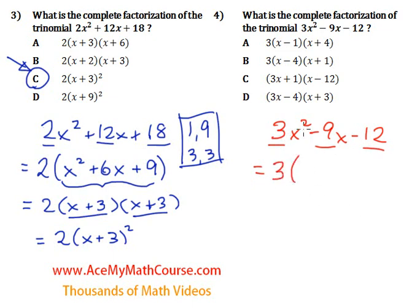3x squared divided by 3 is just x squared. Minus 9x divided by 3, minus 3x. Minus 12 divided by 3, which is minus 4. Wonderful.